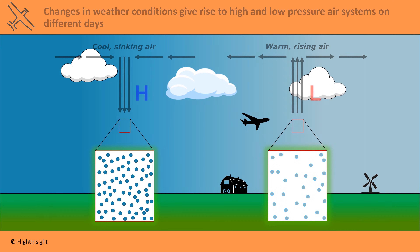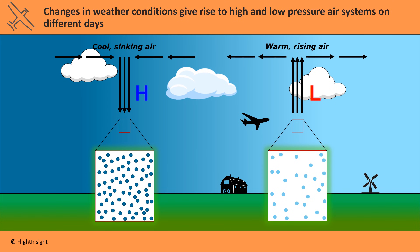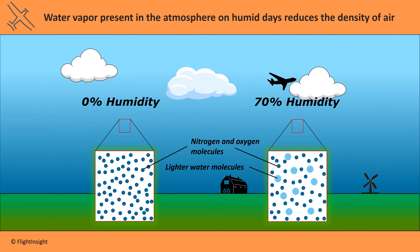Changes in weather conditions give rise to high and low pressure air systems on different days, and aircraft performance is poorer on days with low pressure. Water vapor present in the atmosphere on humid days reduces the density of air — bigger water molecules push or crowd out air molecules, so aircraft performance is poorer on days with high humidity.